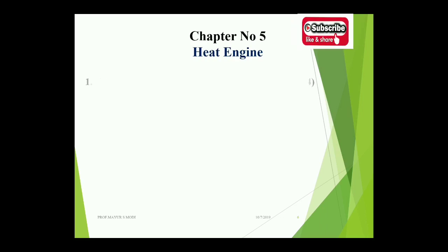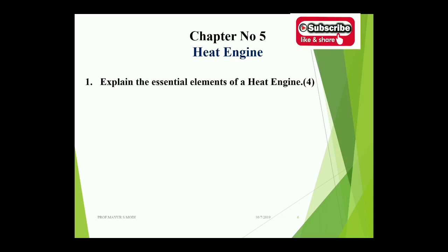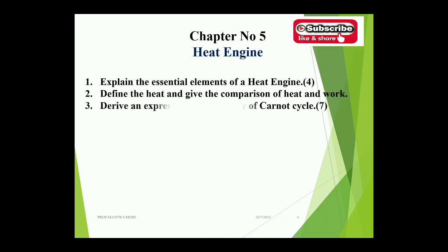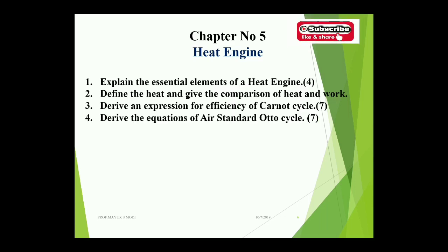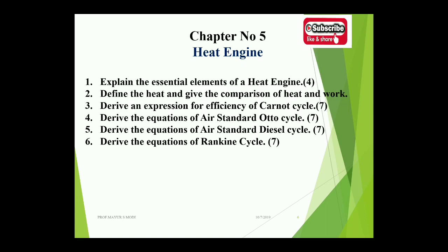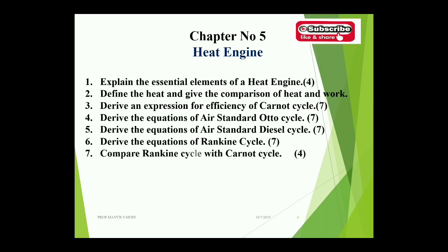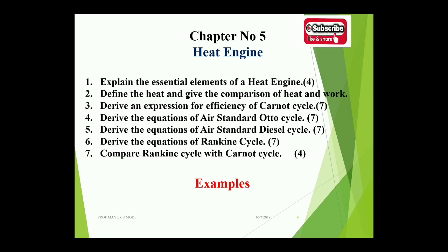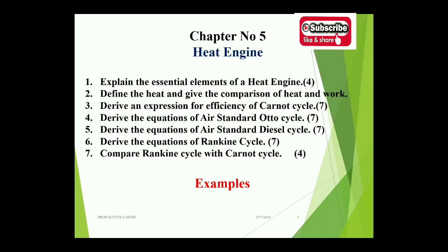Chapter five covers heat engines. Topics: explain the essential elements of a heat engine, 4 marks. Define heat and compare heat and work, 3 to 4 marks. Derive an expression for efficiency of the Carnot cycle, 7 marks. Derive equations for the air standard Otto cycle, 7 marks. Derive equations for the air standard Diesel cycle, 7 marks. Derive equations for the Rankine cycle, 7 marks. Compare the Rankine cycle with the Carnot cycle, 4 marks. One example for 7 marks. Generally, one of the Carnot, Otto, or Rankine cycle theories has maximum chance for 7 marks, plus one example.